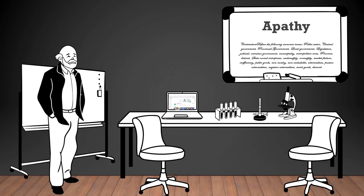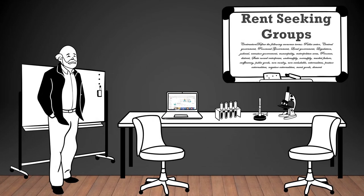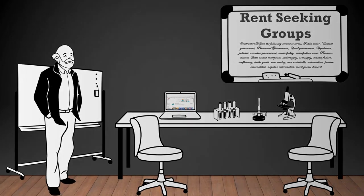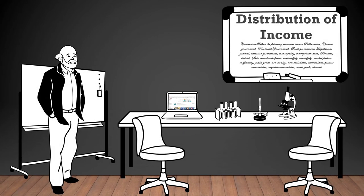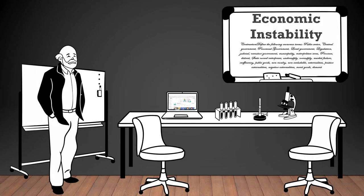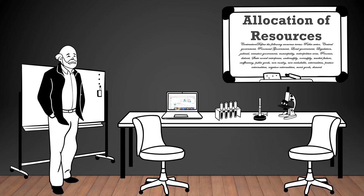Apathy: lack of interest, enthusiasm, or concern, often leading to disengagement from civic and economic activities. Rent-seeking interest groups: groups or individuals that try to influence government policies to gain economic benefits or rents, often without contributing to the production of goods or services. Distribution of income: the way income is divided among different individuals or groups in a society. Economic instability: the condition of an economy characterized by fluctuations in economic indicators such as GDP, unemployment, and inflation. Social instability: a situation in which there is unrest or disruption within a society due to economic, political, or social factors. Allocation of resources: the process of distributing and utilizing scarce resources to produce goods and services in an economy.